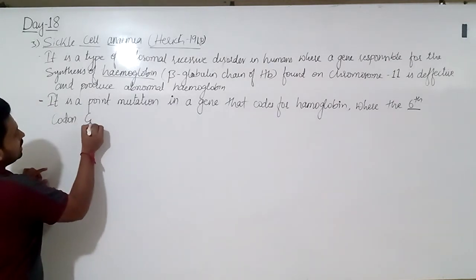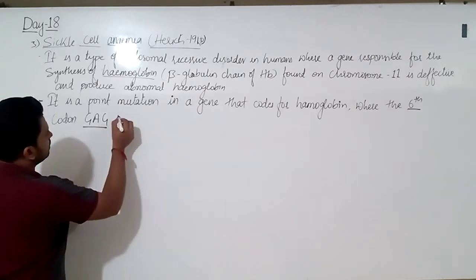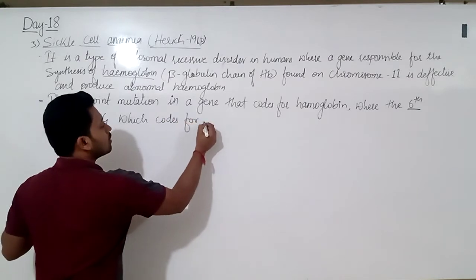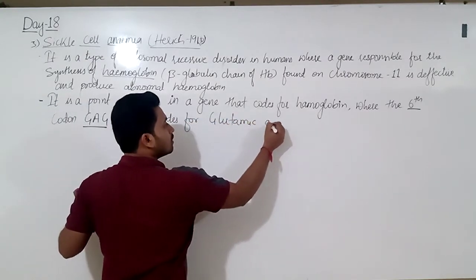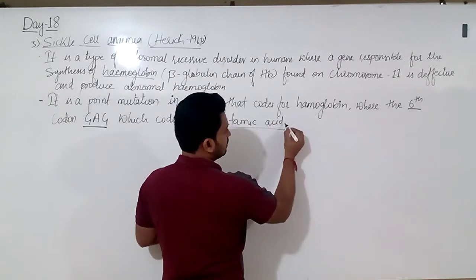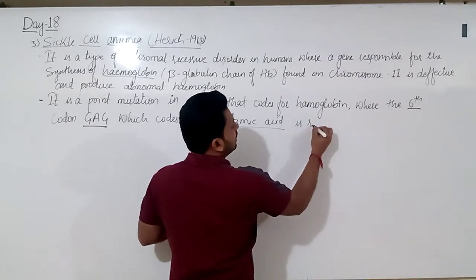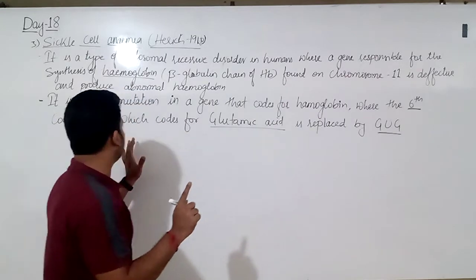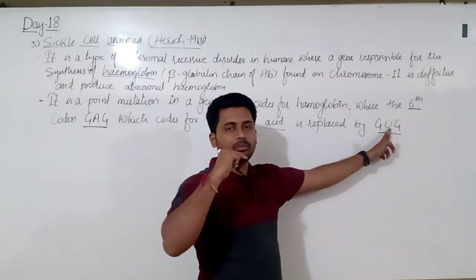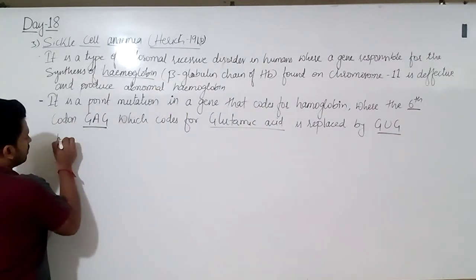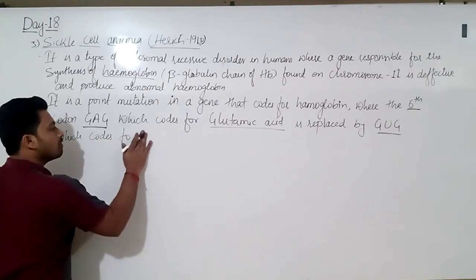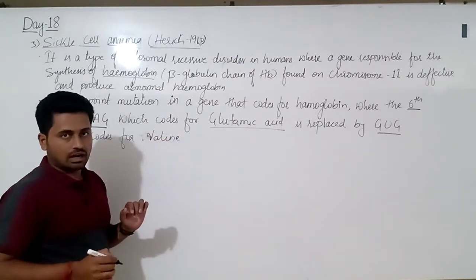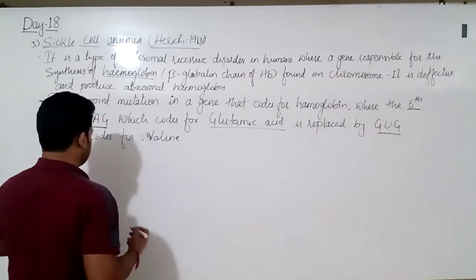The sixth codon GAG, which codes for glutamic acid, is replaced by GUG — only a single change where A is replaced by U. GUG codes for valine. Due to this substitution, the structure of the beta globulin chain changes.